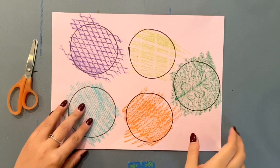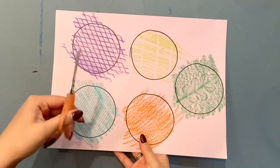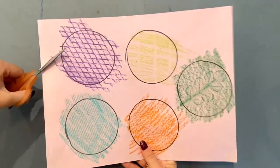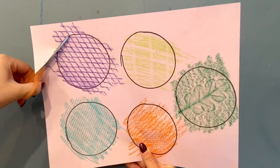Go around, find textures. When you're done, cut all of those circles out.